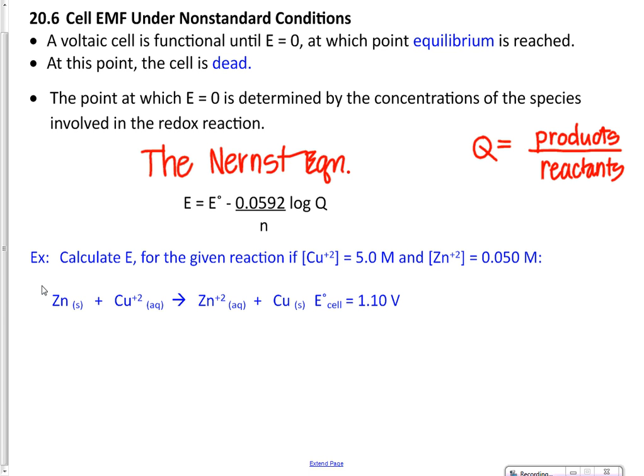Now it's best to just see it actually used because then I think you'll see that it's not as confusing as it might first appear. So the example that you have in your page says to calculate E. Now notice that there's no degree symbol so it's assumed that it's non-standard conditions. And we're given a reaction if we know that the copper ion concentration is 5.0 M and the zinc ion concentration is 0.050 M. So we're looking at non-standard conditions here. And then this reaction is given to us and it's actually giving us a value of the E cell as 1.10 volts. So it's telling us what the standard EMF is.